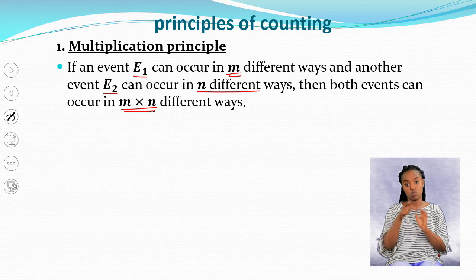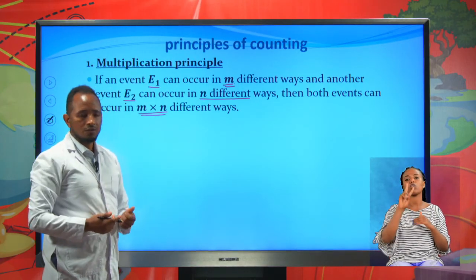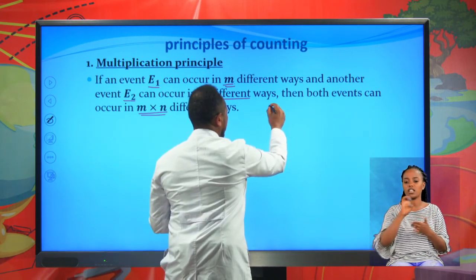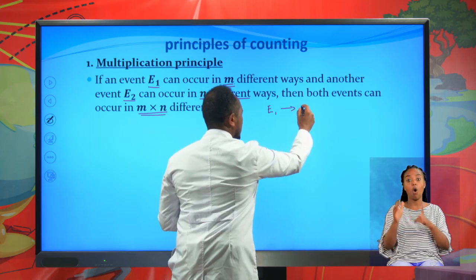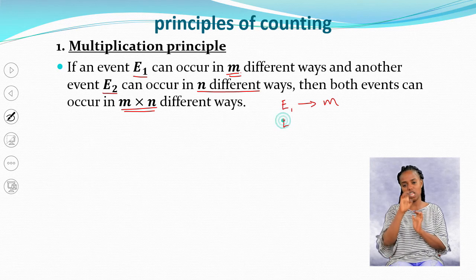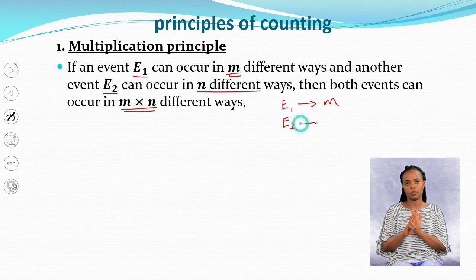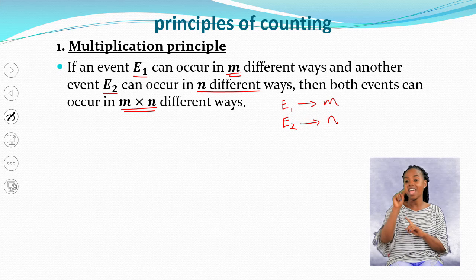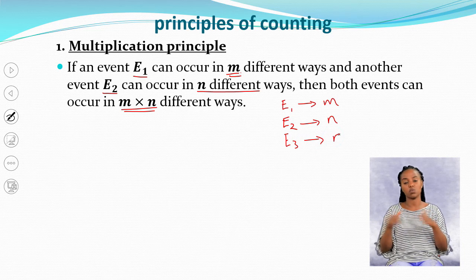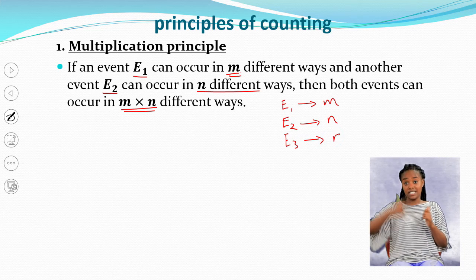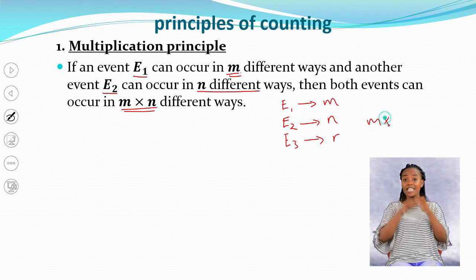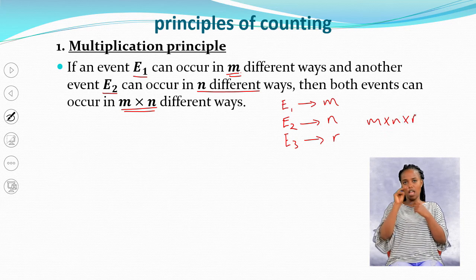You can extend this for more than two events. For example, if we have three events: E1 occurs in M different ways, E2 occurs in N different ways, and E3 occurs in R different ways, then these three events simultaneously occur in M × N × R different ways.